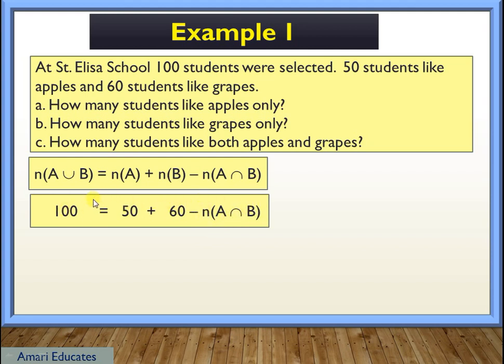So all we need to do is to solve this equation. We're just going to transfer 50 here, and the 60 here. Remember that when we're transposing, we are changing the sign. So the intersection will give us 10.